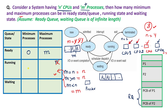Now, what is the minimum number of processes which can be present on these n CPUs in the running state? The answer is 0. How can we have 0? If the value of m is 0, then all the CPUs will remain idle, no process will be there to execute on these n CPUs. So minimum 0 processes can be in the running state.